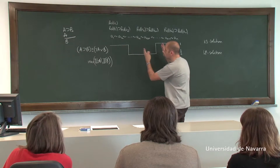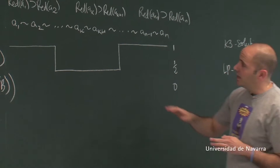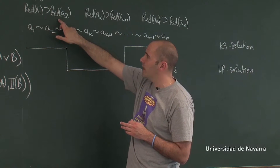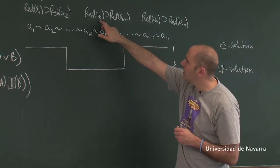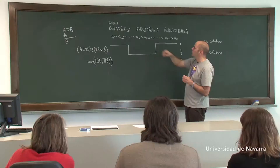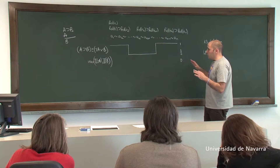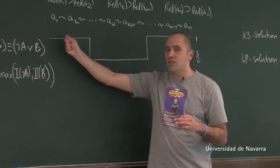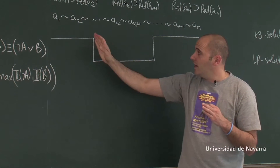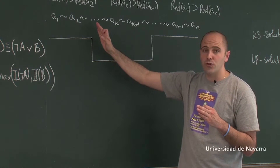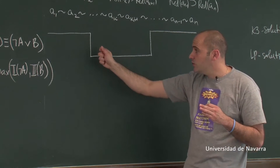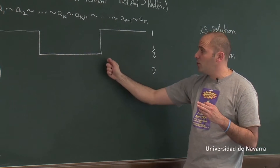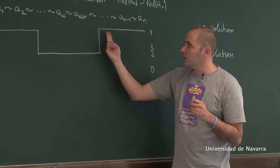If we go to the sorites sequence and concentrate on the conditionals — A1 is red, then A2 is red; AK is red, then AK+1 is red; etc. — what we see is that each conditional at the beginning takes value 1. At some point, the truth value of the conditional drops to the middle value. But at some point again, the conditional goes up.